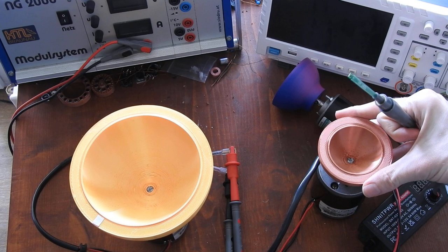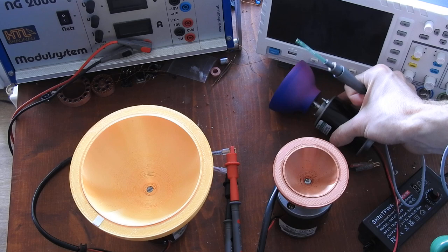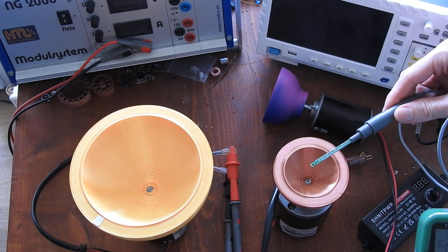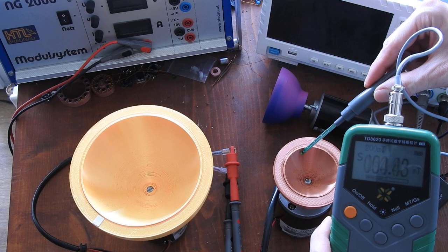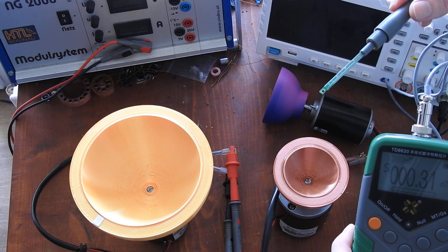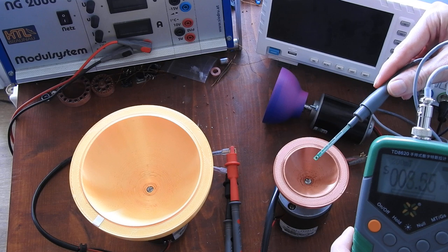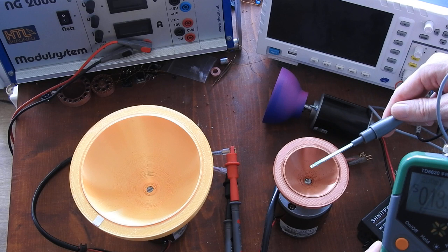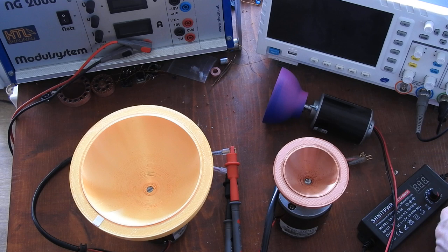So with this array, the smaller array with the neodymium magnets—remember it's the same array like this—the field strength of course is much higher. As you can see, if I go further away from it, you will see it extends out like 30 centimeters easily and it's still measurable. So it's plenty enough for all kinds of purposes for the human body.